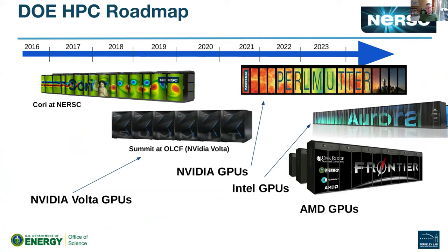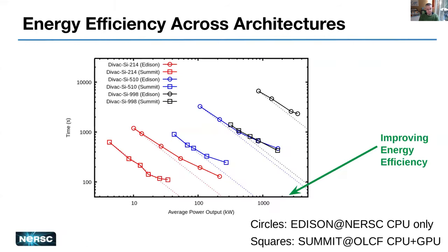In terms of the broader DOE HPC ecosystem within the Office of Science, GPUs are really beginning to play an important role. Summit at the Oak Ridge Leadership Computing Facility is already a CPU-plus-GPU system powered by NVIDIA Volta GPUs. With Perlmutter we're using the NVIDIA Ampere next-generation GPUs. The next-generation systems coming to the Argonne Leadership Computing Facility and Oak Ridge will also support Intel GPUs as well as AMD GPUs.